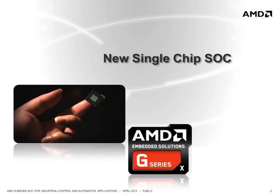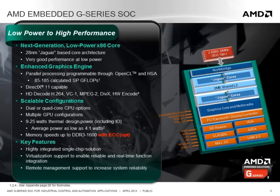The AMD G-Series SOC is a true system on chip that integrates x86 CPU cores, a high performance graphics processor, and a full complement of I/O into a single piece of silicon. The G-Series SOC is built around a combination of very good performance Jaguar x86 CPU cores and a DirectX 11 capable GPU that is able to deliver high compute performance for a variety of industrial applications.